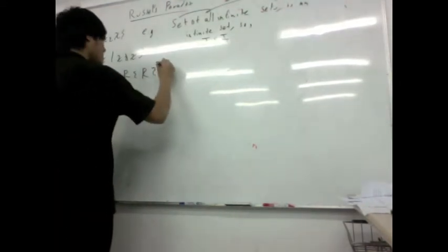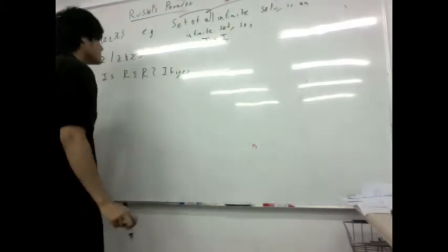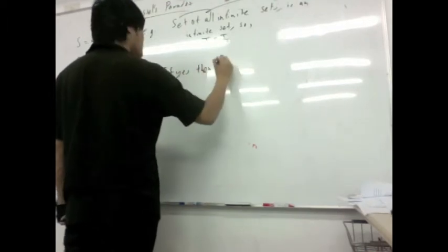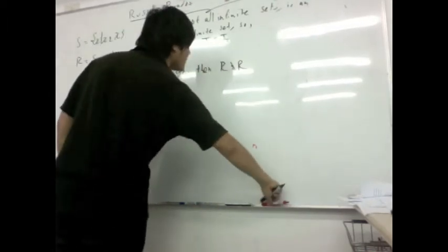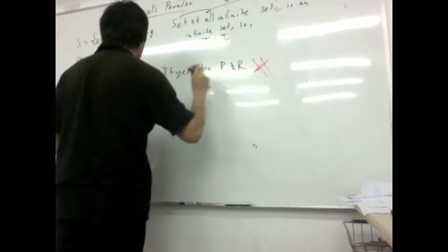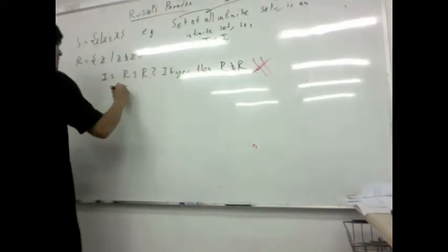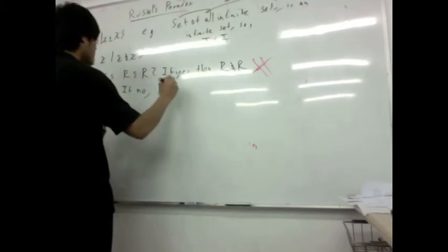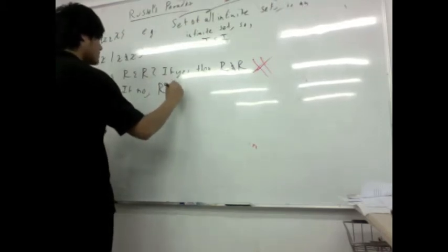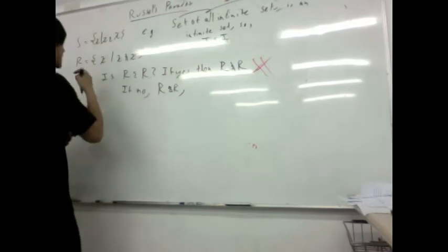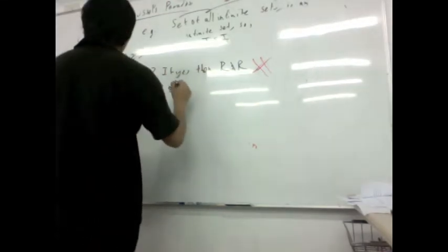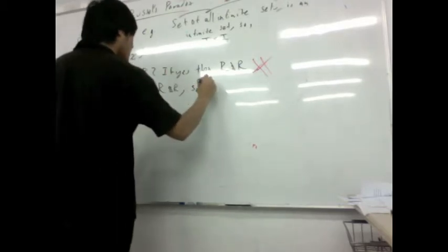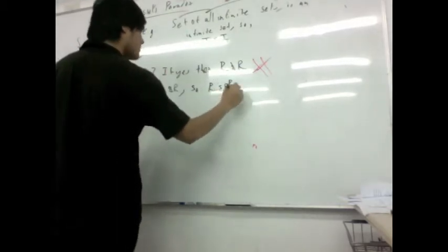Is R in R? Well, if yes, then R is not in R. So that. If no, then R is not in R. But if R is not in R, then this says that this is the set of things that are not in themselves. So R is in R, which is also a contradiction.